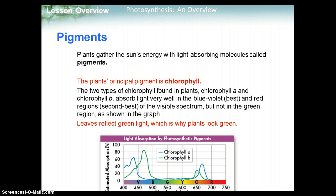Plants gather the sun's energy with light-absorbing molecules called pigments. The plant's principal pigment is chlorophyll. There are two types of chlorophyll found in plants: chlorophyll A and chlorophyll B. They absorb light very well in the blue-violet spectrum, and you can see peaks of optimum absorption for chlorophyll A and B. They also absorb energy in the reddish visible spectrum. But they don't absorb in the green area — that's why leaves look green. They're actually reflecting the green wavelength. The colors you see are wavelengths being reflected back to your eye; the colors you don't see are being absorbed.